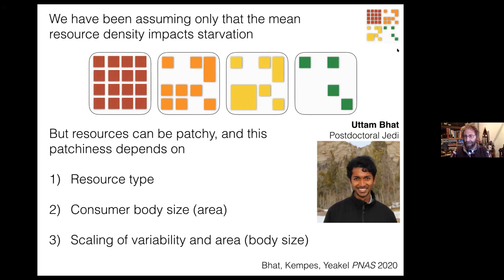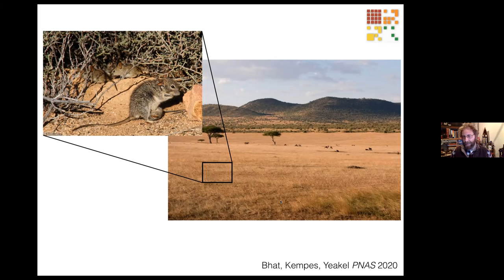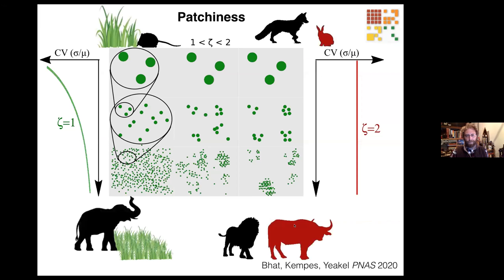This work was led by postdoctoral researcher Utam Bhatt, who is now at UC Santa Cruz. The idea that patchiness scales with consumer body mass is illustrated as follows: consider the savanna landscape. A savanna mouse sees a very different resource patchiness landscape than an elephant moving across a broader plain. The savanna mouse sees a very patchily distributed landscape, whereas the elephant sees a much more homogeneously distributed landscape.